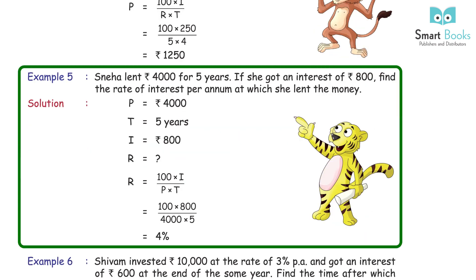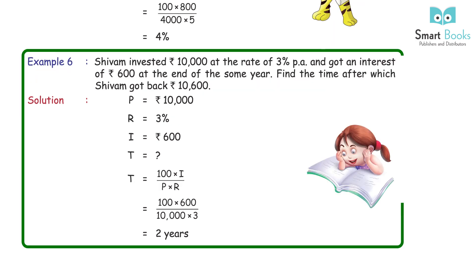Example 5: Sneha lent Rs 4,000 for 5 years. If she got an interest of Rs 800, find the rate of interest per annum at which she lent the money. Solution: P = Rs 4,000, T = 5 years, I = Rs 800. R = 100 × I ÷ (P × T) = 100 × 800 ÷ (4,000 × 5) = 4% PA.